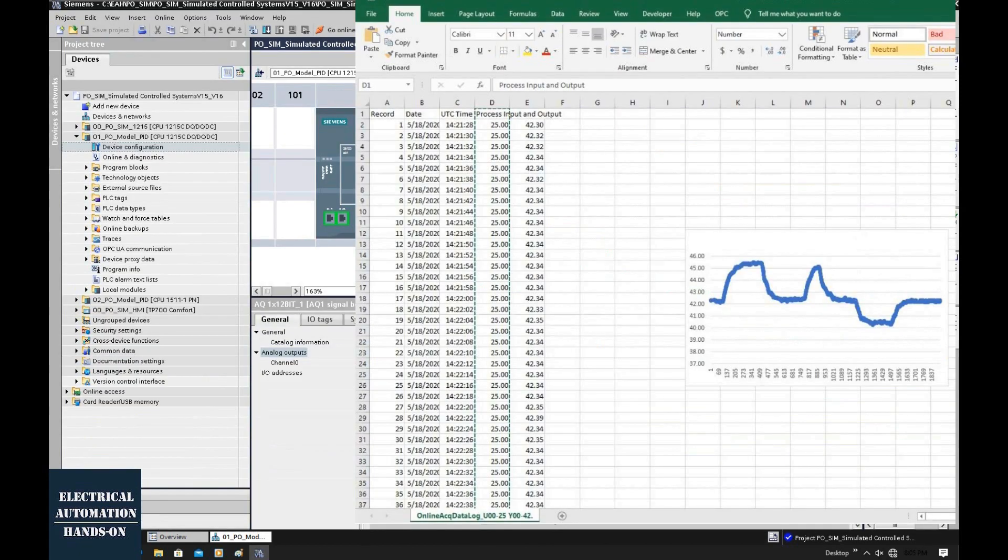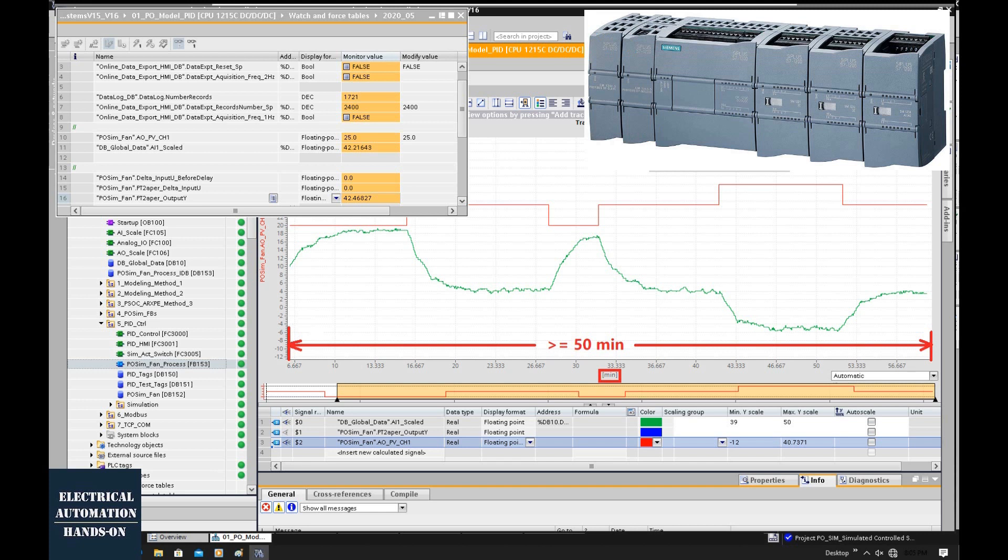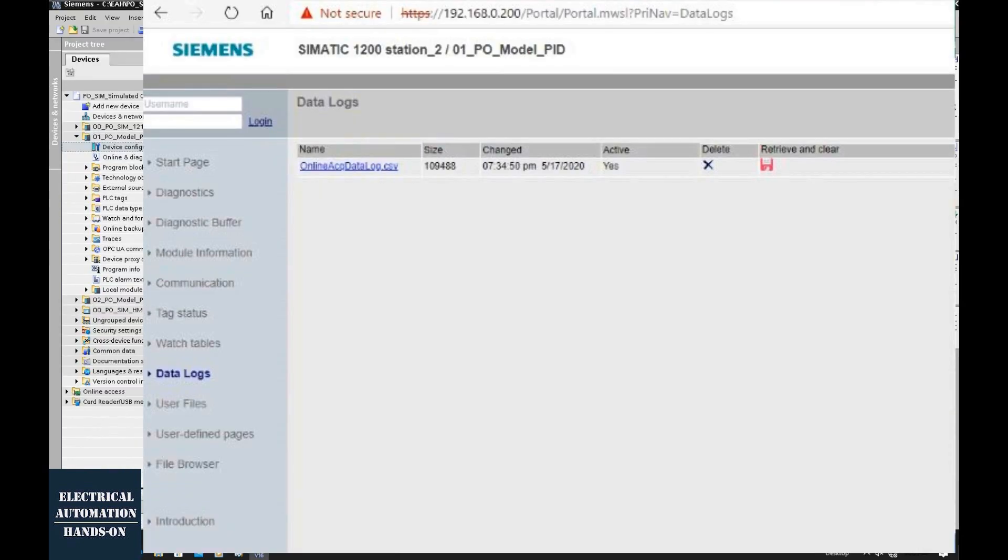The data record function is needed because we'll record the step response and import that data into MATLAB to identify the process model. Usually we can use the HMI to implement these two features, or some PLCs have them built-in. For example, this S7-1200 Siemens controller has built-in online curve and data record functions, which is why I use this small controller - it's very convenient.